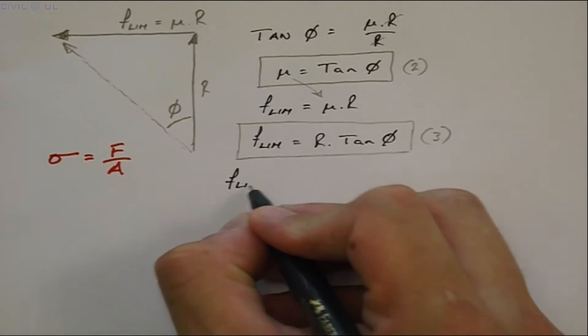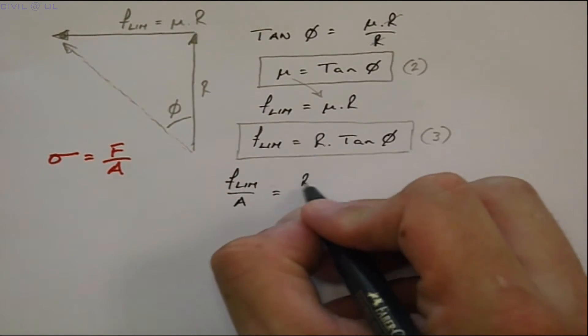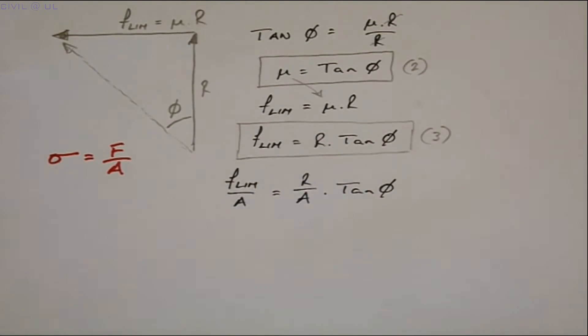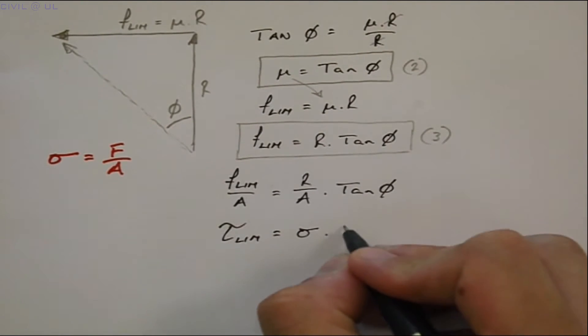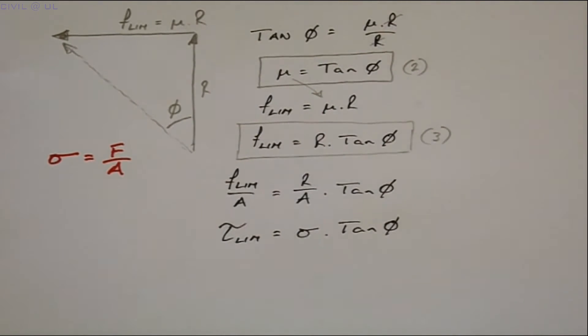F lim divided by A is equal to R over A times tan of phi. Or the limiting shear stress is equal to the normal stress times the tan of the angle of friction.